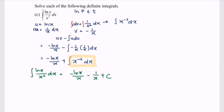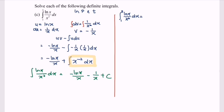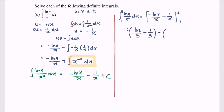This is a definite integral, so we need to substitute the limits. The integral of ln x over x squared with respect to x for the limit 1 to 3 equals negative ln x over x minus 1 over x, evaluated from 1 to 3. Substituting the upper limit 3: negative ln 3 over 3 minus 1 over 3. Substituting the lower limit 1: negative ln 1 over 1 minus 1 over 1.